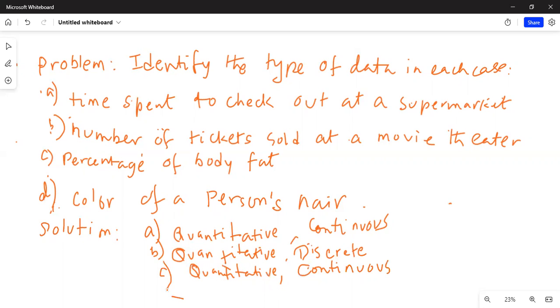Then part D says color of a person's hair. Now, the person's hair can be black, can be brown, can be golden. So these are all categories. So this is qualitative data.